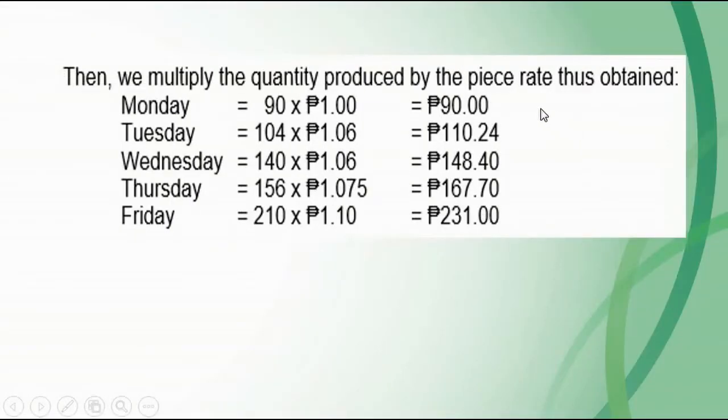Then we multiply the quantity produced by the piece rate thus obtained. Monday: 90 multiplied by 1 peso is equal to 90 pesos. Tuesday: 104 multiplied by 1.06 is equal to 110 pesos and 24 centavos. Wednesday: 140 multiplied by 1.06 is 148 pesos and 40 centavos. Thursday: 156 multiplied by 1.075 is 167.70. Friday: 210 pesos multiplied by 1.1 is equal to 231 pesos.